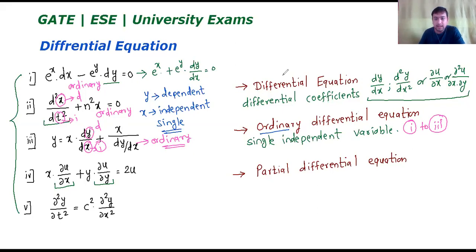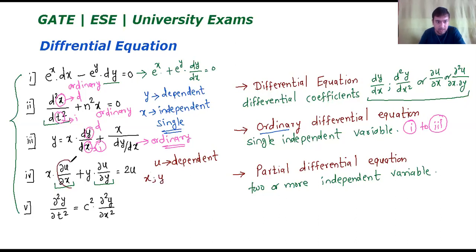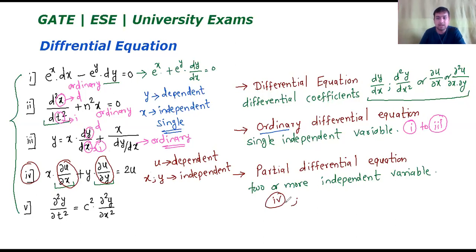The second type is the partial differential equation. A differential equation in which there are two or more independent variables is called a partial differential equation. Consider equation number 4: x del u by del x plus y into del u upon del y equals 2. In this equation, u is the dependent variable. It is dependent on x as well as y, because there are two terms: del u by del x as well as del u by del y. Since there are two independent variables, equation 4 is a partial differential equation.